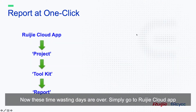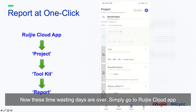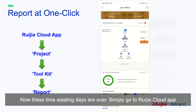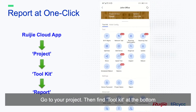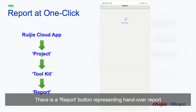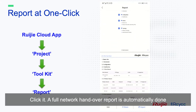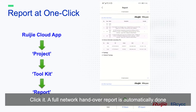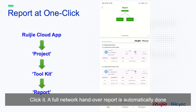Now, these time-wasting days are over. Simply go to the RG Cloud app, go to your project, then find toolkit at the bottom. There is a report button representing the handover report. Click it, and a full network handover report is automatically done.